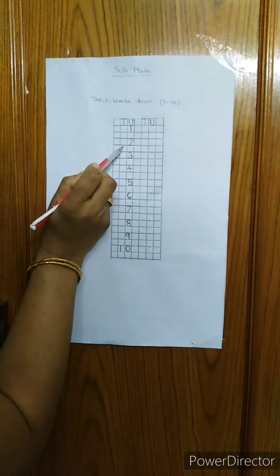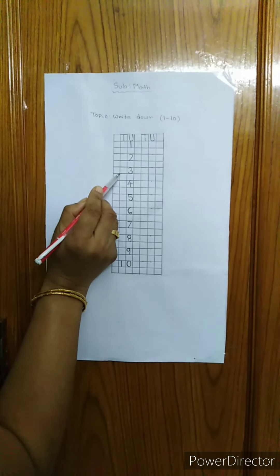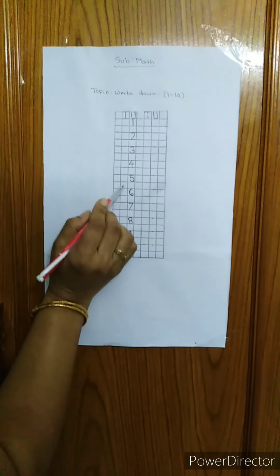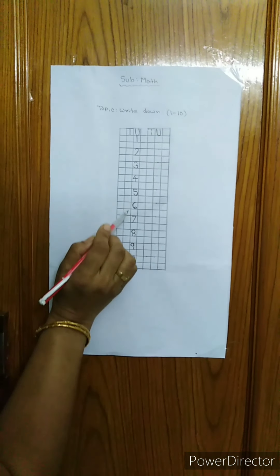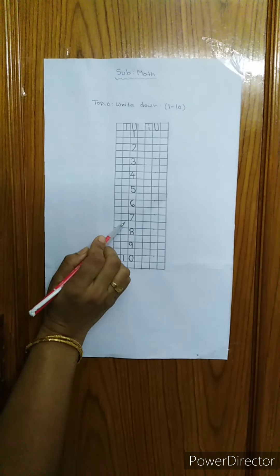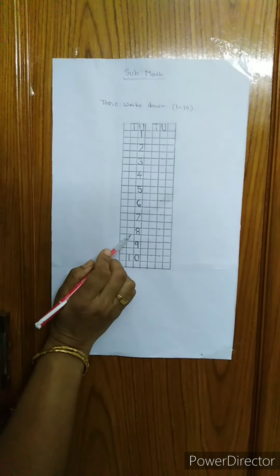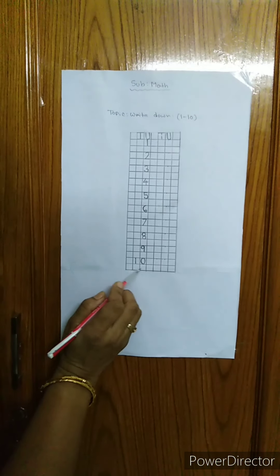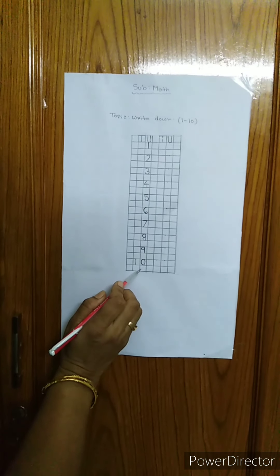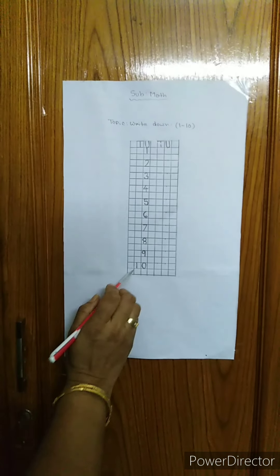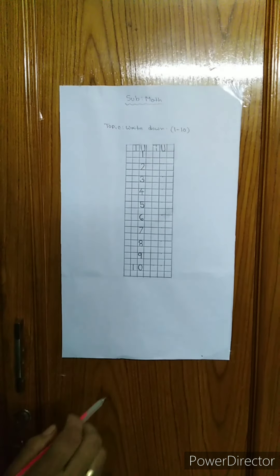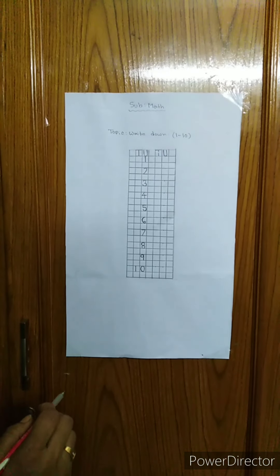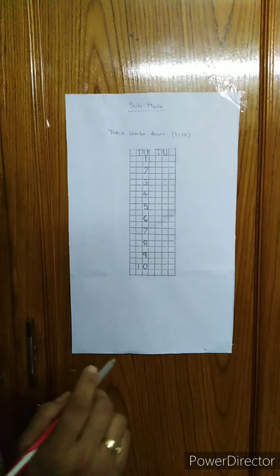1, 2, 3, 4, 5, 6, 7, 8, 9, 10. Okay, so I will explain how to write 1 to 10.